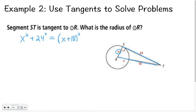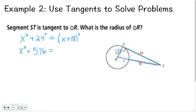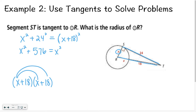So X squared plus 576 — and here you need to draw on your Algebra 1 knowledge. If we have X plus 18 squared, that is not X squared plus 18 squared. You have to FOIL your answer. X plus 18 times X plus 18 gives you: X squared, plus 18X, plus 18X — so 36X total — plus 18 times 18, which is 324.